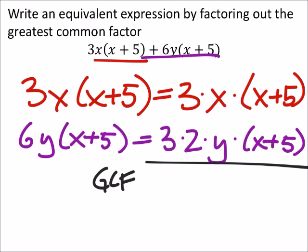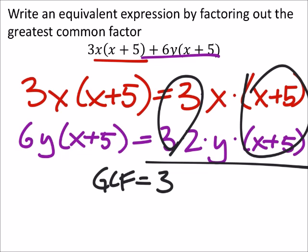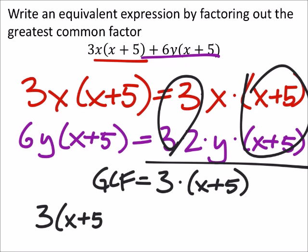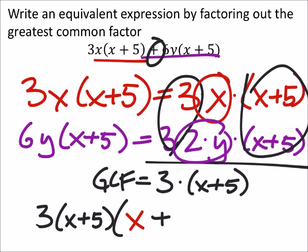So now when we look at the greatest common factor, we get a 3 and an x+5 in parentheses. So the greatest common factor is 3 times (x+5). If it really helps, you can put that in parentheses, most people don't like that though. And then inside the parentheses comes what's left of what we started out with. We had the x and we had the plus, and we got the 2y. So there we go.